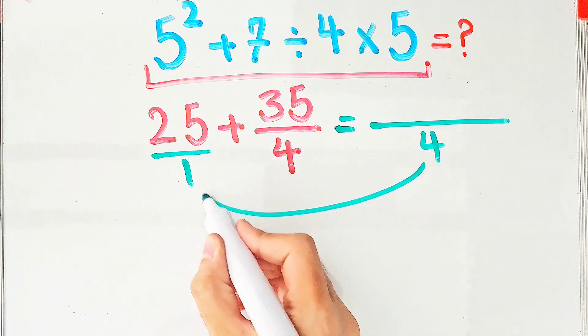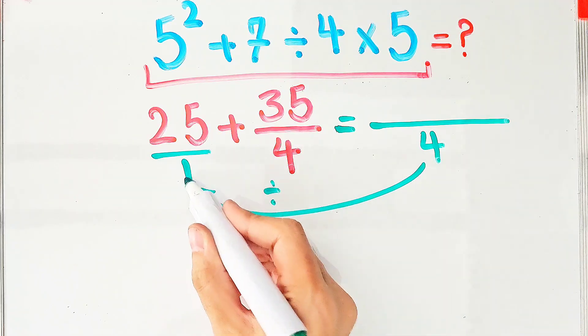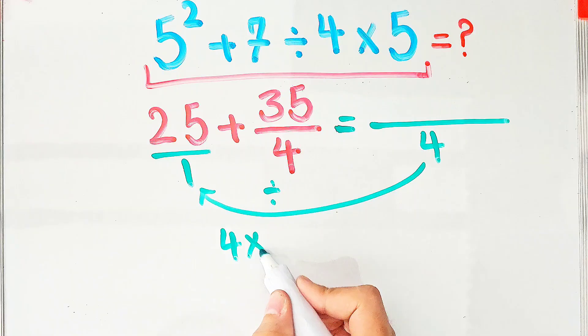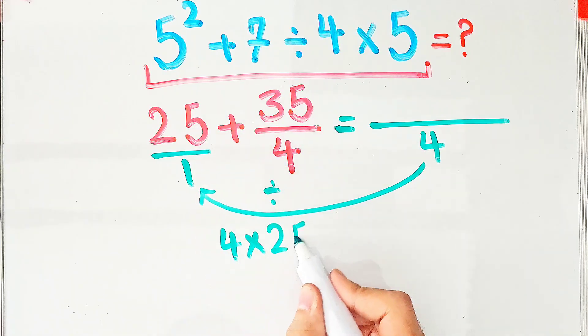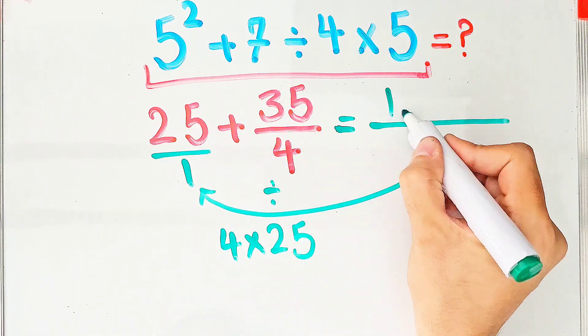4 divided by 1 equals 4, and 4 times 25 equals 100. We write 100 in the numerator. Now in